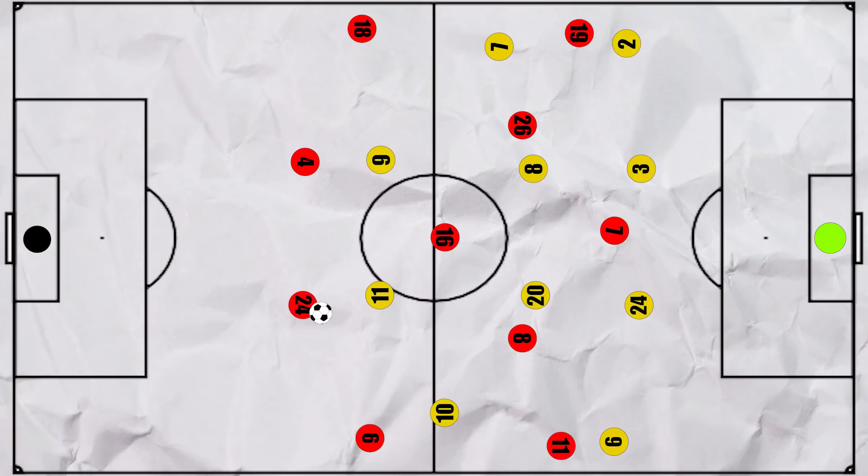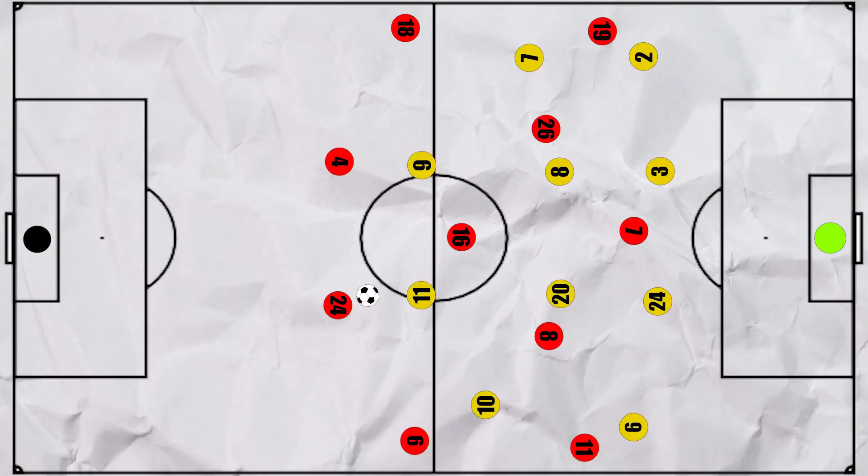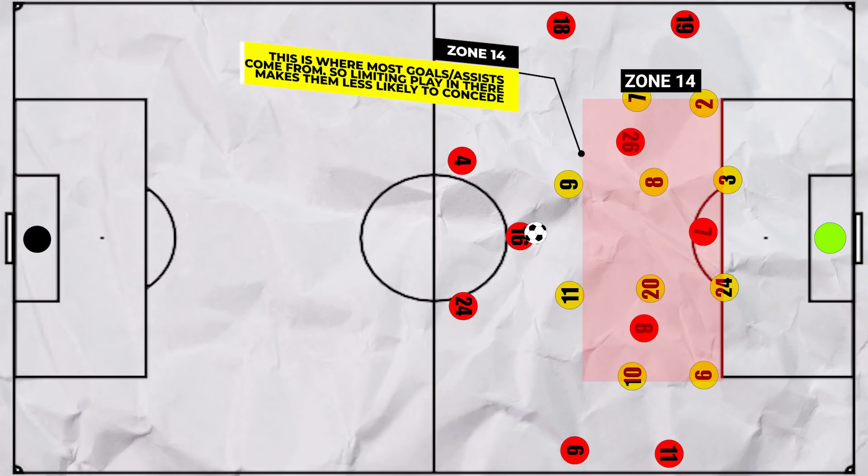Sweden were generally happy to concede the wide areas, as Spain are traditionally not a high volume crossing side, although they did manage to get two great chances in this manner. But primarily, Sweden looked to sit deep and compact with most of the team between the width of the box, making entering zone 14 almost impossible, which is an area that Spain's highly technical midfielders usually like to play in.